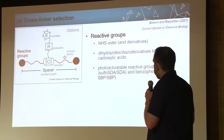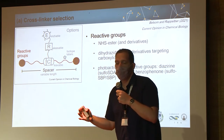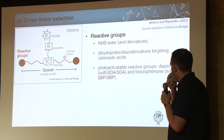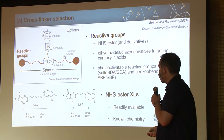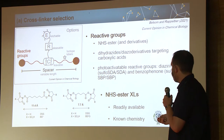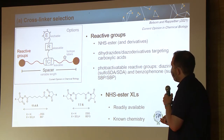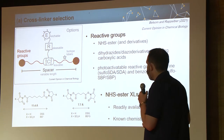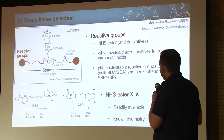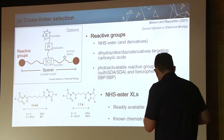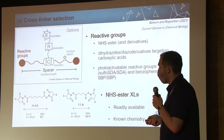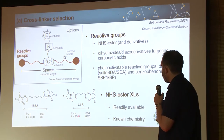The most well-known cross-linkers are NHS esters and derivatives, which target lysine residues and amine groups like the protein N-terminus. The classic examples are the suberate family: DSS and BS3. The difference between DSS and BS3 is that BS3 has a sulfonyl group making it more water-soluble. Cross-linker solubility is an important factor to consider. The most popular cross-linkers in the literature are DSS, BS3, DCH, and BS2G.